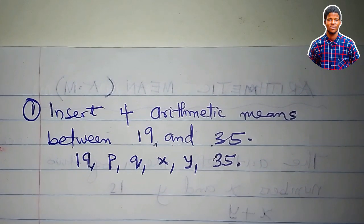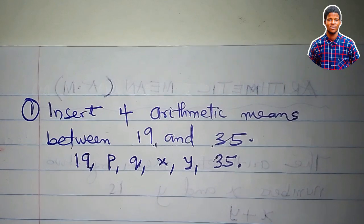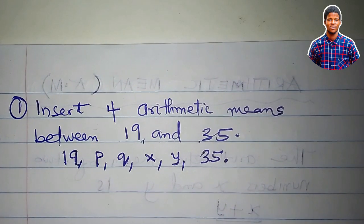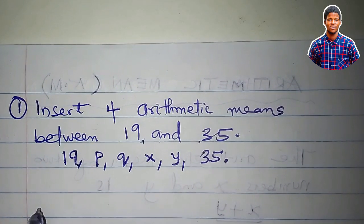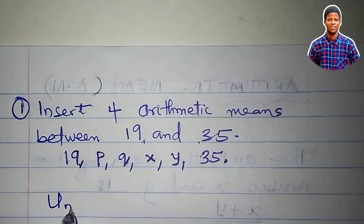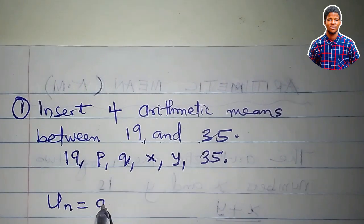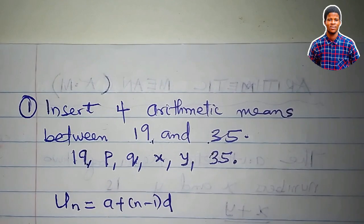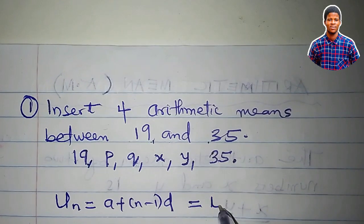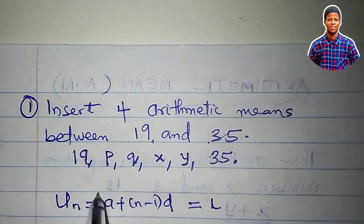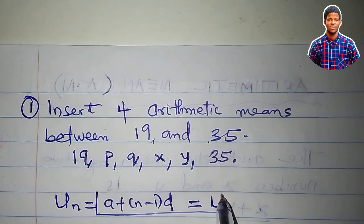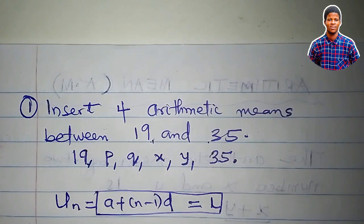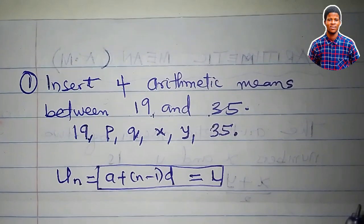We are going to make use of the formula for the nth term of a sequence. Remember, we said in our previous video that the nth term of a sequence, U sub n, is equal to A plus n minus 1, D. And this nth formula, we said it is equal to the last term. So I'm going to make use of this right now.